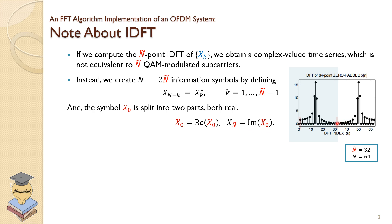This is an example shown in the diagram here where N-tilde is 32, so the created vector before doing the inverse discrete Fourier transform will be 64 with two conditions just to make sure that we get a real signal. Otherwise, in general, we will not get a real signal.